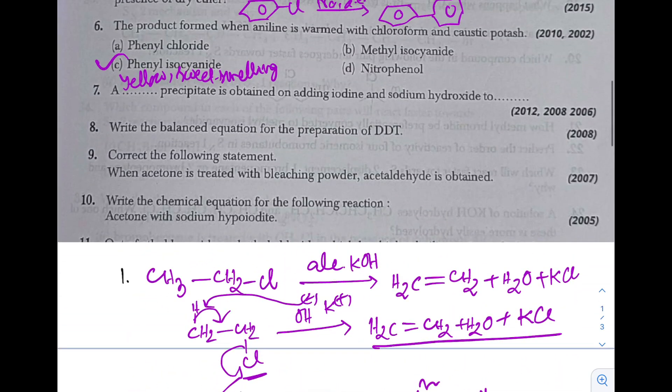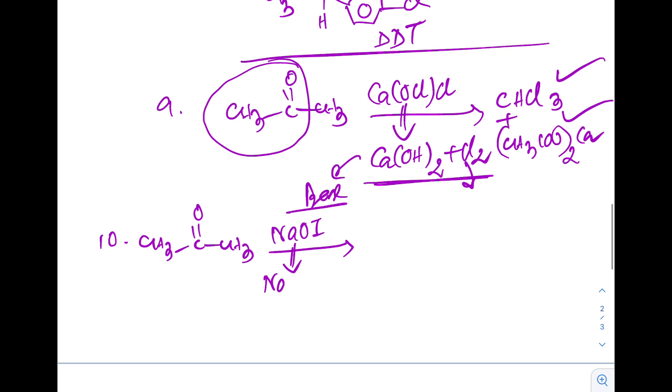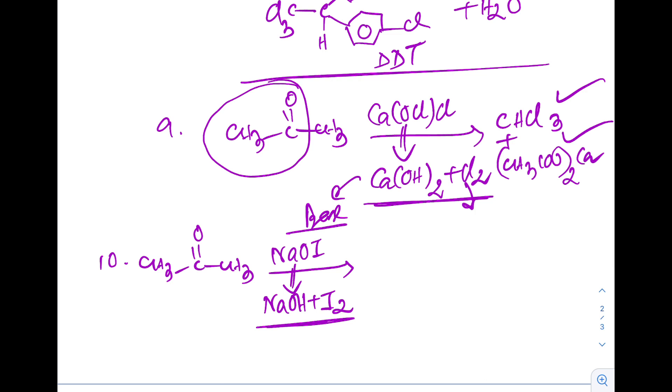Question 10: Write the chemical equation for the following reaction - acetone with sodium hypoiodite. Acetone, sodium hypoiodite is NaOI, it basically dissociates in medium to produce NaOH plus I2. So this will take part in haloform test. Here iodoform will be formed - yellow sweet-smelling crystal - as well as the sodium salt of corresponding carboxylic acid will be obtained. These two products will be formed. Question 10 is done.